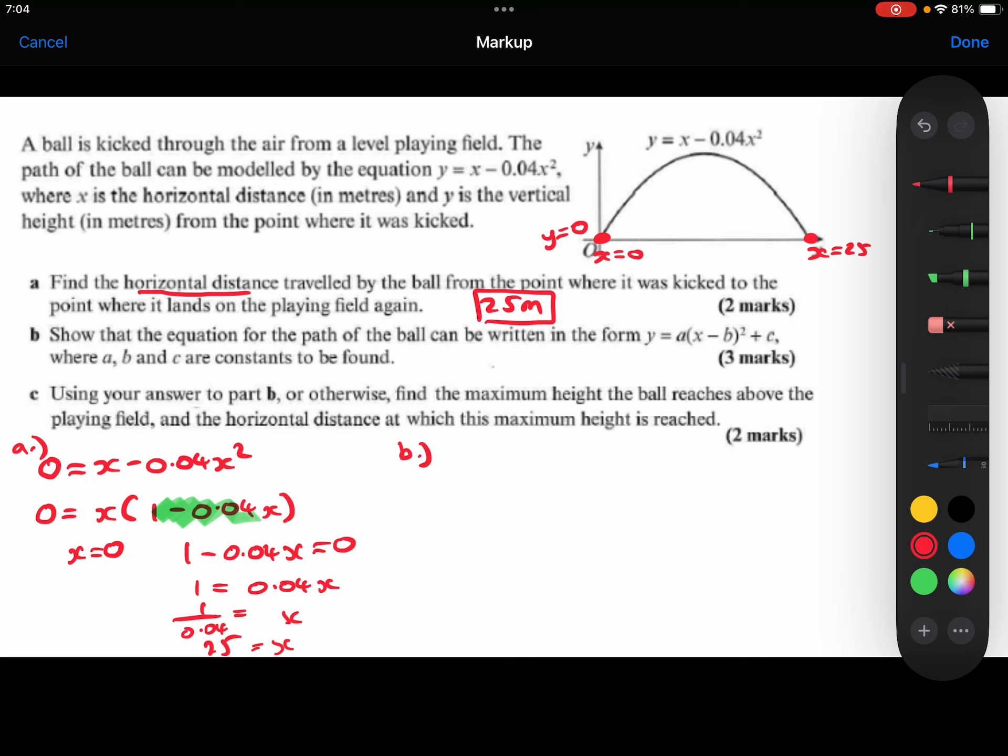Part B. We need to show that the equation, this equation here, can be written in this form. So it's asking us to complete the square. First thing I'm going to do is rewrite the equation with the minus 0.04x squared at the front.